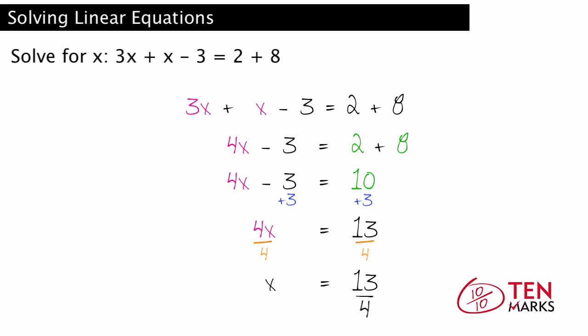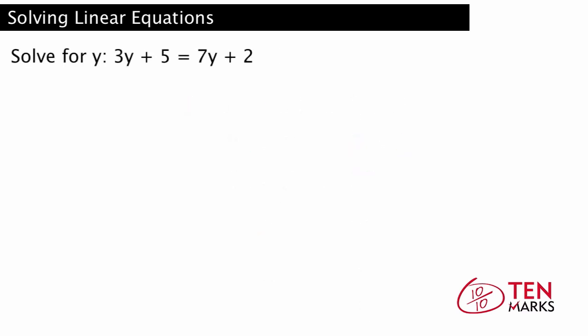Now that you've learned to simplify and solve more complex equations, let's try another problem. This one's a little more interesting. It has variable terms on both sides. 3y plus 5 equals 7y plus 2. Since there are variable terms on both sides, you first need to bring them to one side.